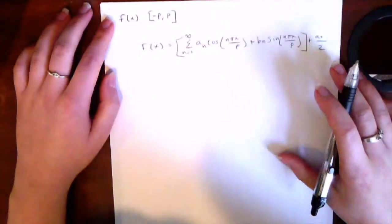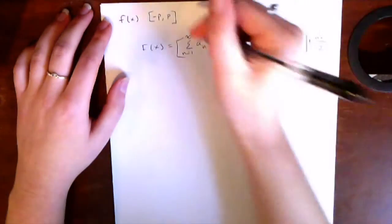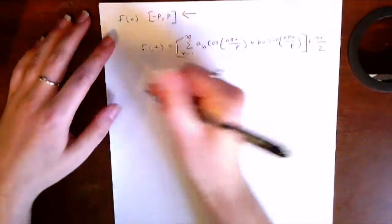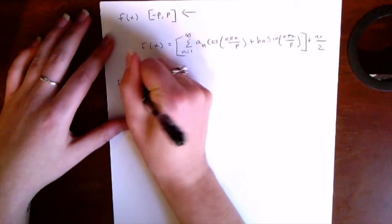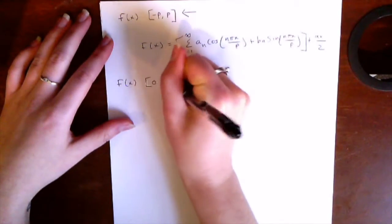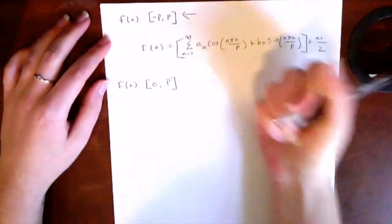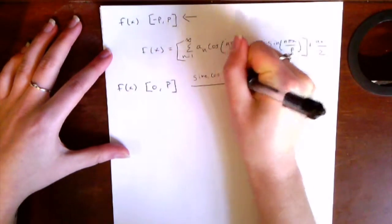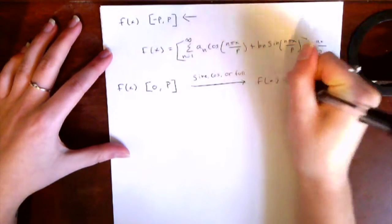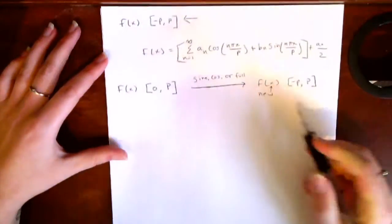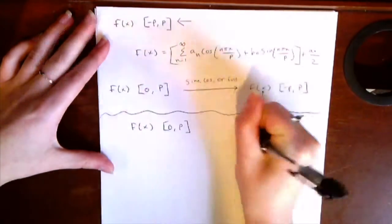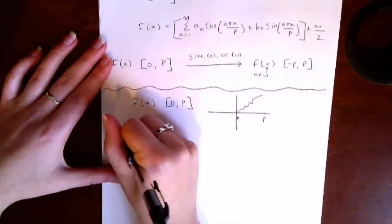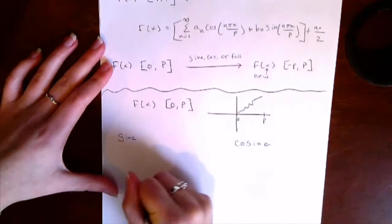Usually when asked to compute the Fourier series of a function, you're given some function on a periodic interval. When given a function f(x) that is not defined on a periodic interval — that is, instead of being on negative p to p, it's from 0 to p — we essentially extend that function to make it defined on a periodic interval. We have three different choices on how to periodically extend this function, resulting in a new function that's either even, odd, or neither.